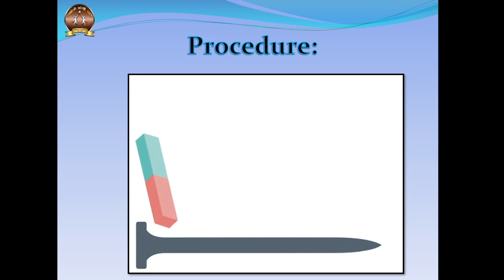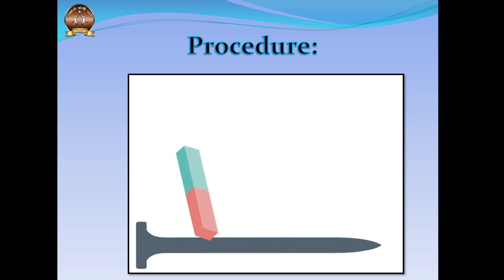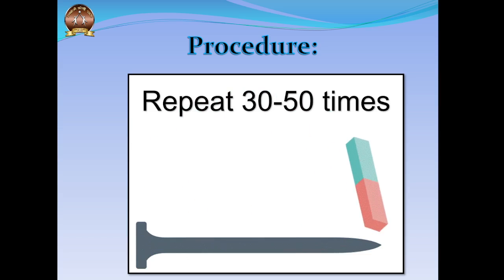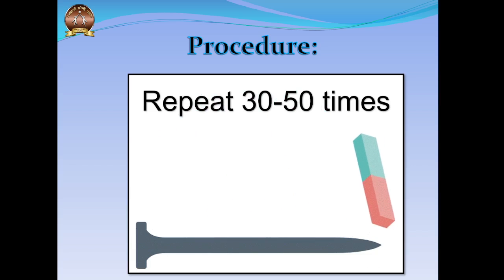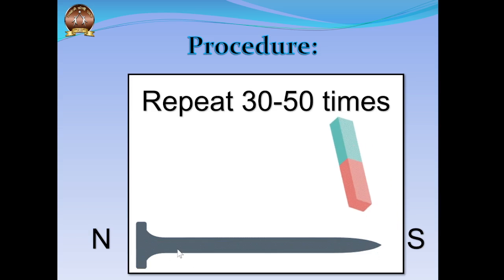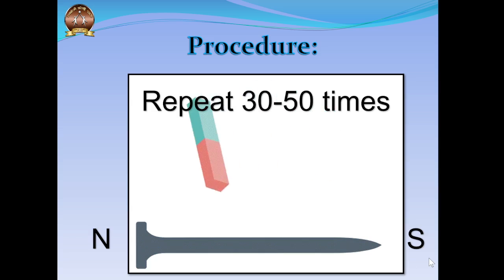The procedure is pretty simple: use one pole of the magnet — here the north pole is used — to stroke along the length of the magnetic material several times, maybe 30 to 50 times. You have to keep stroking in a single direction, moving the magnet along the length of the needle, then lifting it at one end and placing it back at the starting end. This has to be repeated several times.